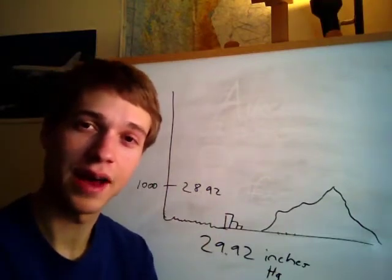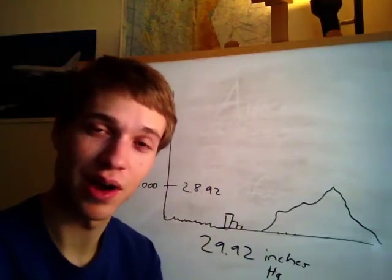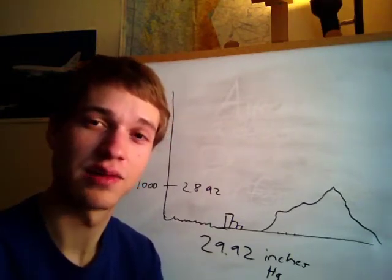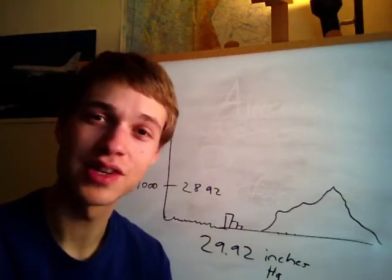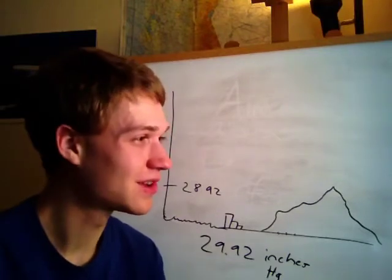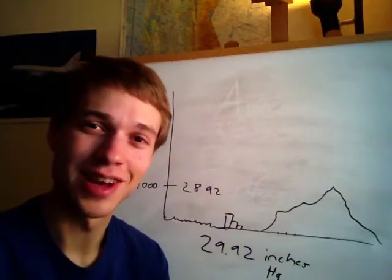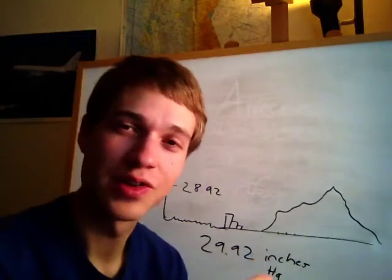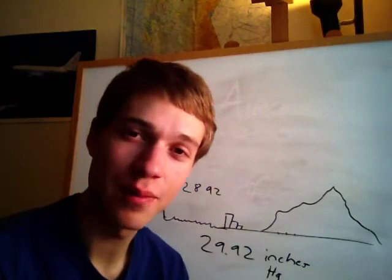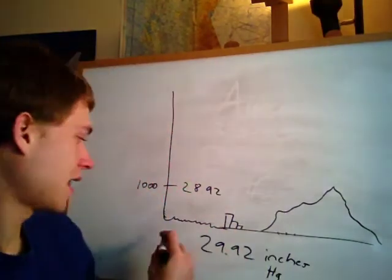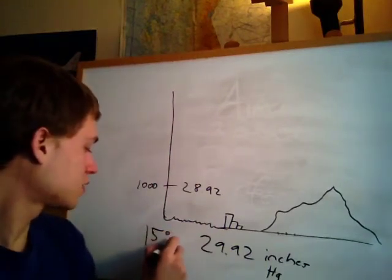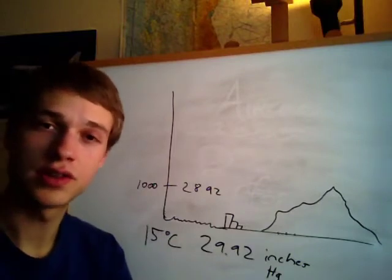Have you ever thought about how temperature might change as you go up higher? You've probably observed this — you're down in the Sacramento Valley on a very hot day, you go up to the mountains and it's nice and cool up there. So how much does the temperature decrease as you go up? Standard temperature at sea level is 15 degrees Celsius. Get used to working with Celsius because you'll do it a lot as a pilot.